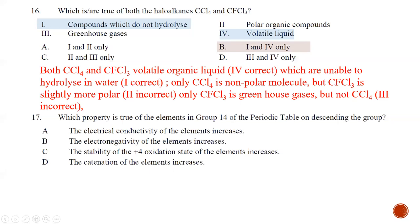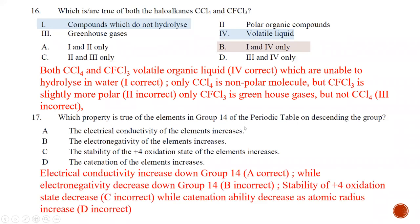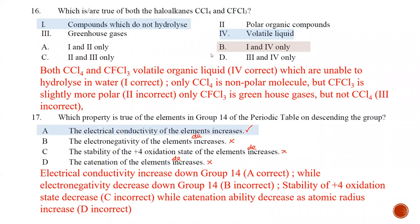Question number seventeen: which property is true of Group 14 elements on descending the group? Statement A — electrical conductivity increases — is correct. Statement B — electronegativity of the element increases — is wrong; electronegativity decreases going down any group. Statement C — stability of the plus four oxidation state increases — is wrong; it decreases. Statement D — catenation of the element increases — is wrong; as bond length becomes longer, catenation becomes more difficult and decreases. The best answer is A.